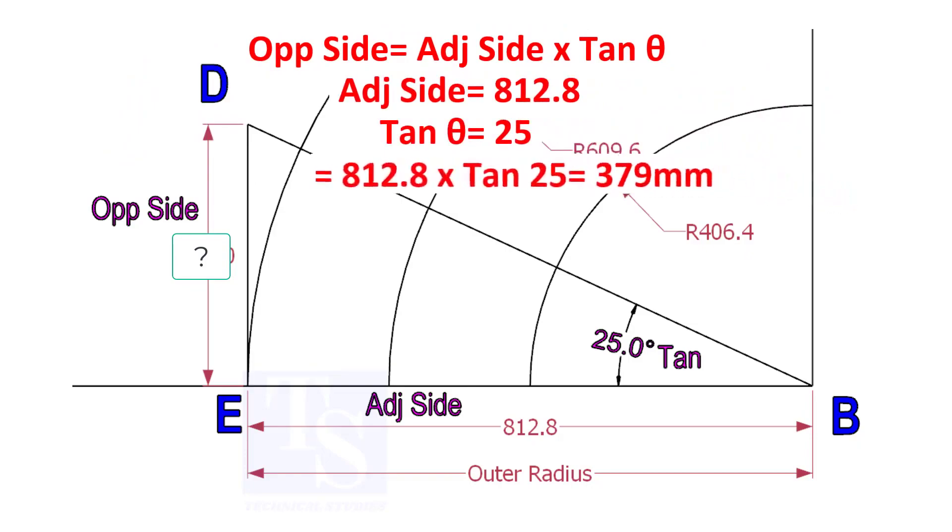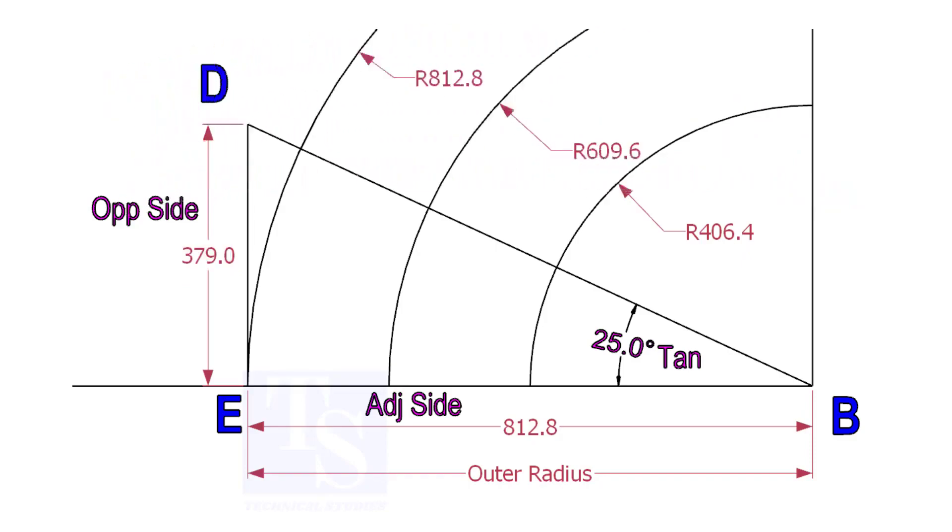812.8 into tan 25 equals 379 millimeters. Draw the line ED vertically and the slant line DB.